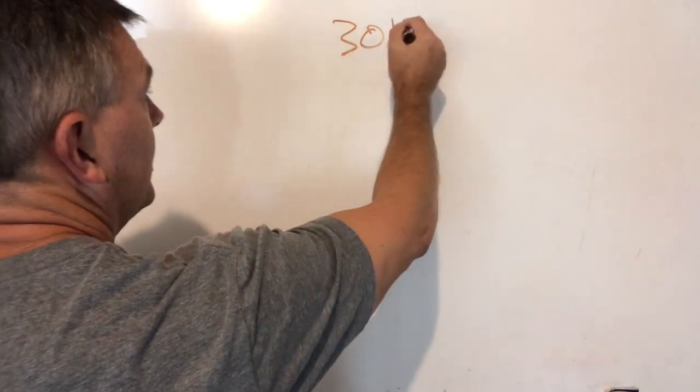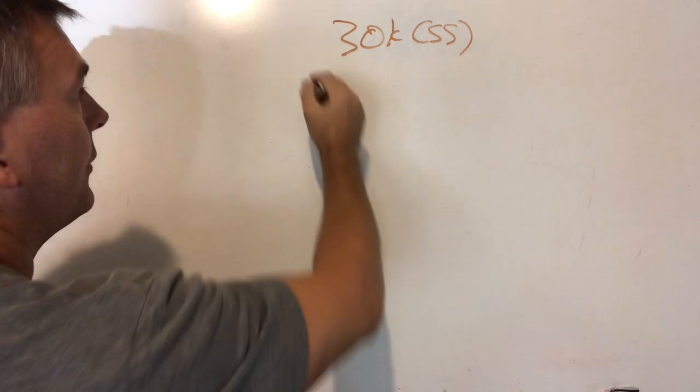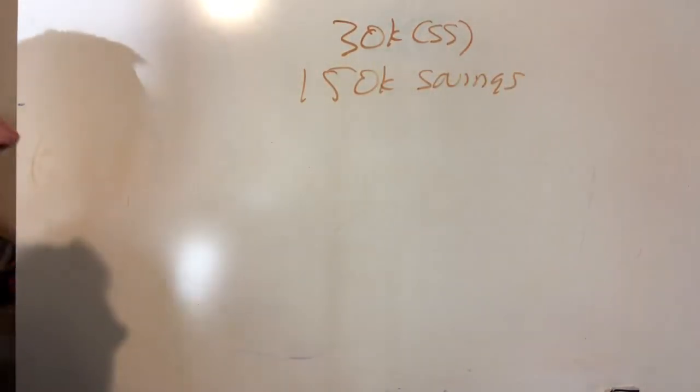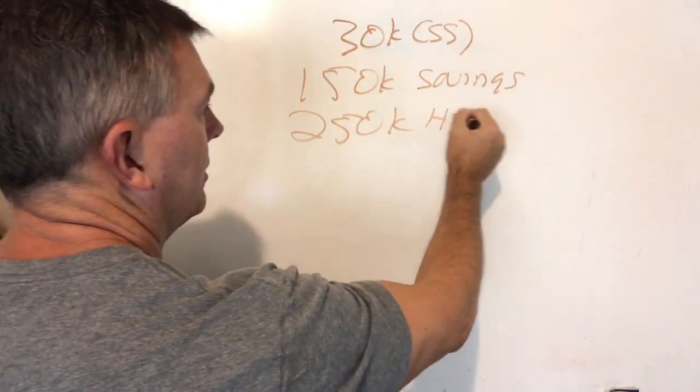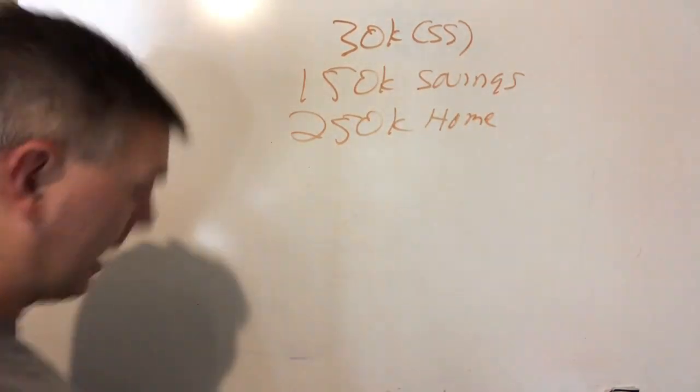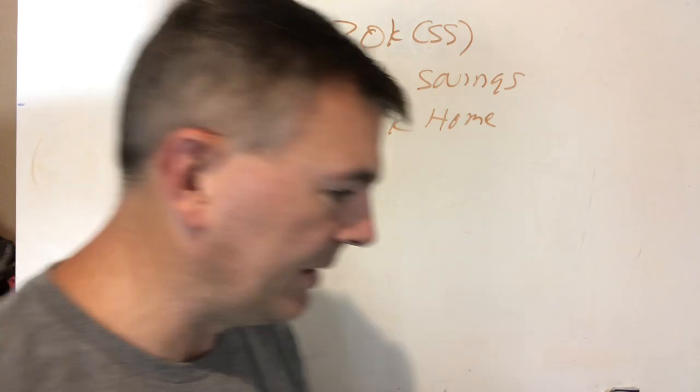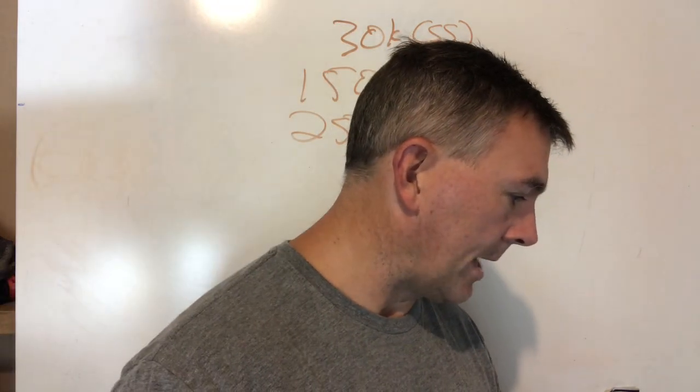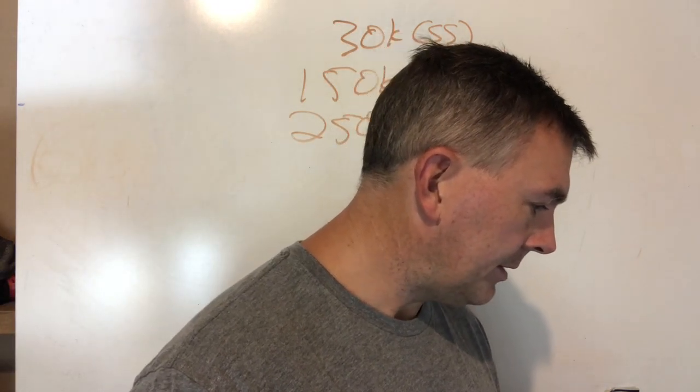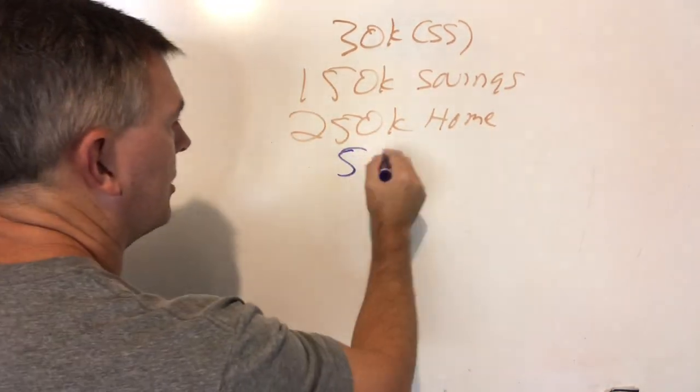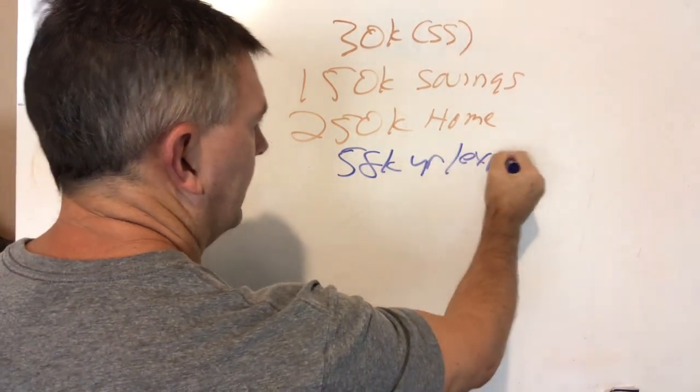The premise here is we have a couple who have $30,000 of Social Security. They have $150,000 in a savings account, no investments at all. $250,000 in home equity, which is essentially paid off is what this guy said. The mortgage is basically paid off. Now, how does he get that?